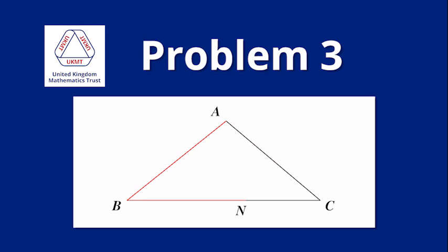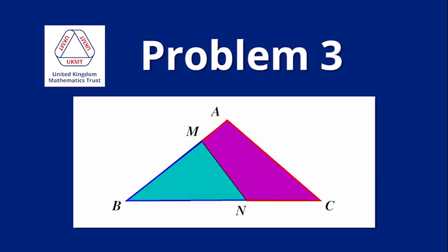The point N is on the side BC, and BN is equal to AB. The line perpendicular to AB, which passes through N, meets AB at M. Prove that the line MN divides both the area and the perimeter of triangle ABC into equal parts.